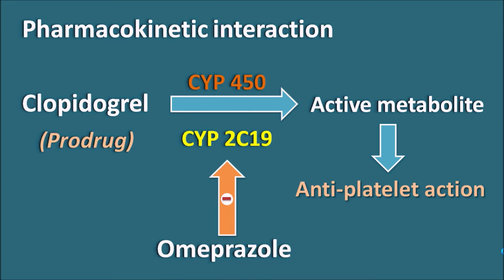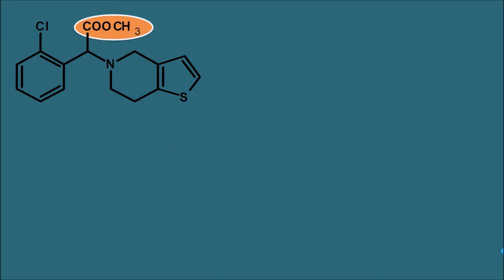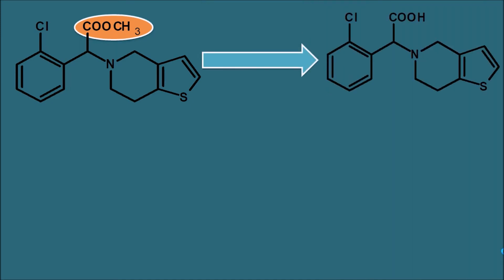Omeprazole inhibits the bioactivation of clopidogrel. Clopidogrel has an ester functionality, which can be cleaved to produce a metabolite with a free carboxylic acid, a step mediated by esterases. Once this free carboxylic acid metabolite is formed, it is conjugated and excreted in the urine — this is one metabolic pathway of clopidogrel. However, the main metabolic pathway responsible for activation of clopidogrel into its active metabolite is mediated by the cytochrome P450 system.